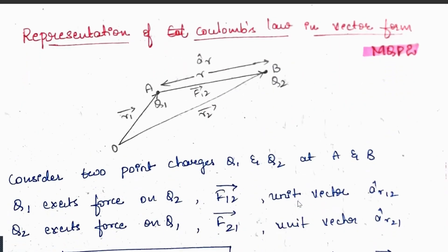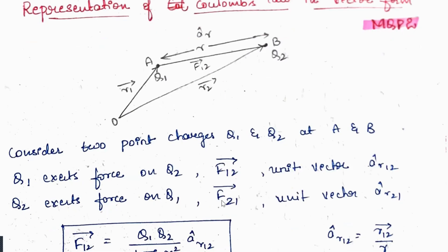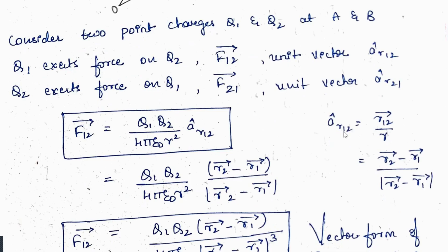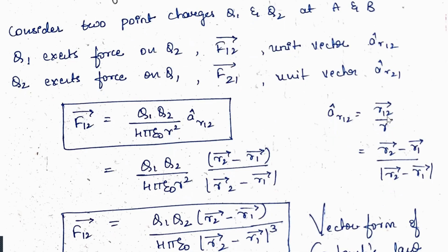Now the vector form of Coulomb's law. Consider two point charges Q1 at position r1 and Q2 at position r2. Q1 exerts a force on Q2 denoted F12 with unit vector âr12; Q2 exerts force on Q1 denoted F21 with unit vector âr21. The force is: F12 = Q1·Q2/(4πε₀·r²)·âr12, where âr12 = (r2 − r1)/|r2 − r1|.